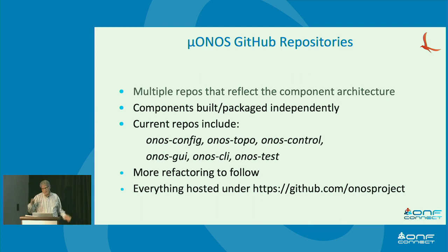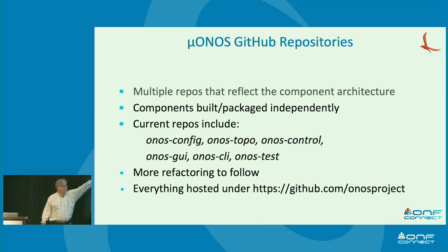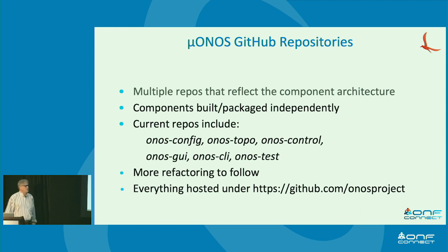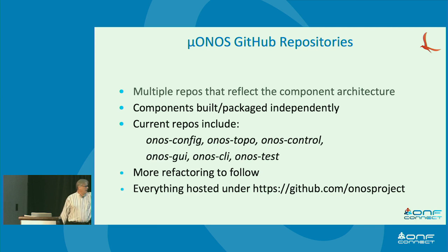In terms of code structure, we have a multi-repo now. Current ONOS is basically a monorepo with a lot of stuff in it. We really want to keep the APIs separated, so we made separate repos — each box on that architecture slide is its own repo. The ones we have today include ONOS config for GNMI configuration onto switches, ONOS topo as a topology manager, control for flows, and the GUI and CLI are completely separate. These things depend on each other but are built and deployed separately. More refactoring will follow — we're only a few months into this project.